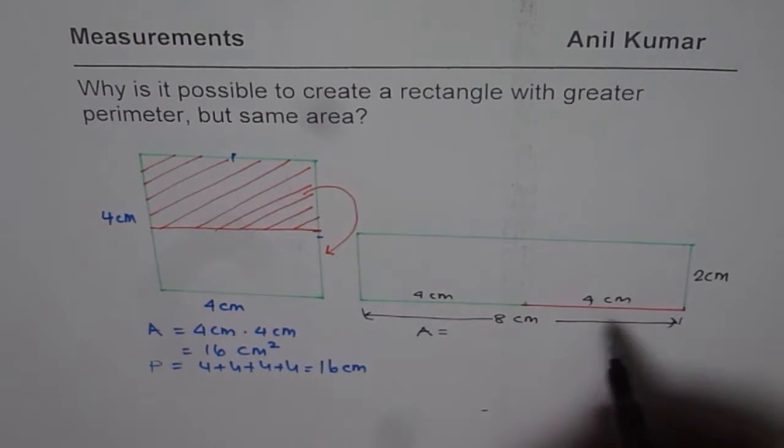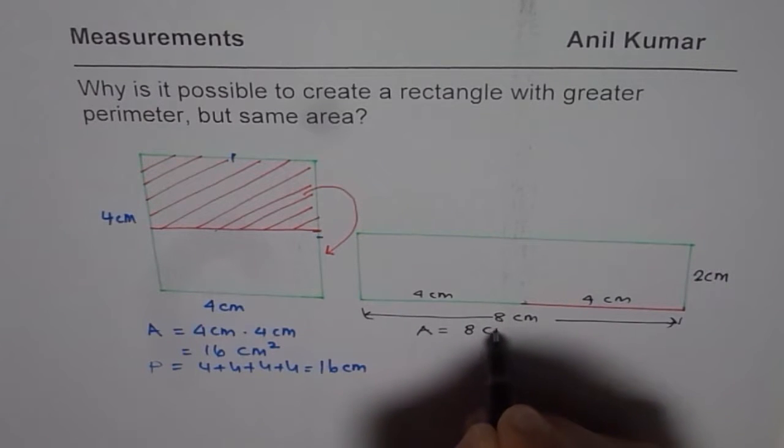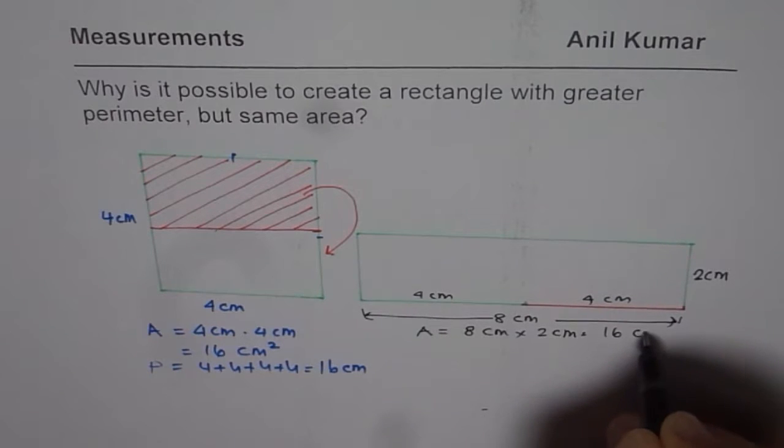In this case, what is the area? Area is 8 times 2. Still the same. So, it is 8 centimeter times 2 centimeter, which is indeed 16 centimeter square.